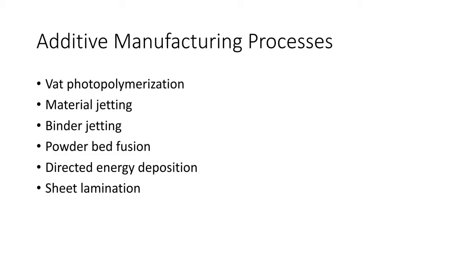Now we will discuss the various additive manufacturing processes. There are around 6 additive manufacturing processes: vat polymerization, material jetting, binder jetting, powder bed fusion, directed energy deposition, and sheet lamination. We will discuss each of these processes in detail.